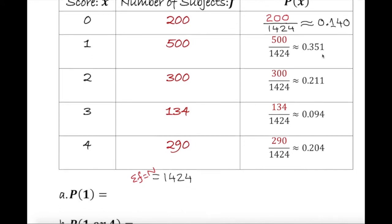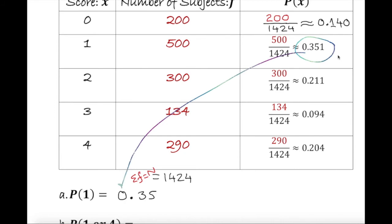Now we're ready to look at the questions. The first question: what is the probability of 1? Looking at the table, the probability of 1 is clearly right there — so the probability of 1 is approximately 0.351, or converting to a percentage, 35.1%. Adjust based on how the question is asked.